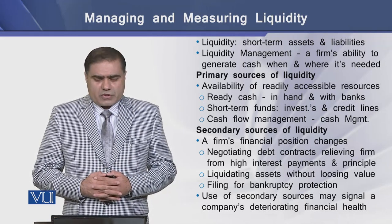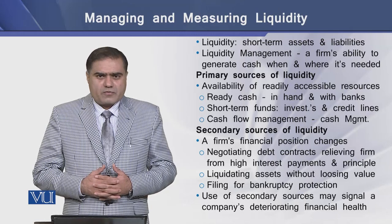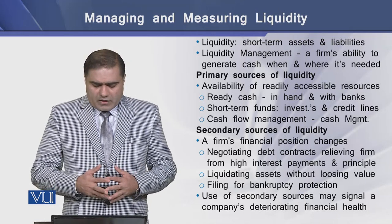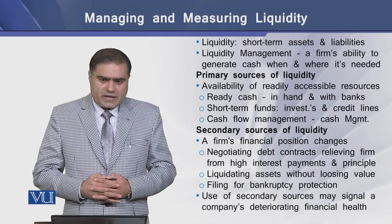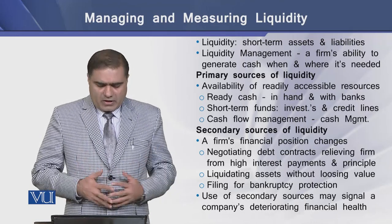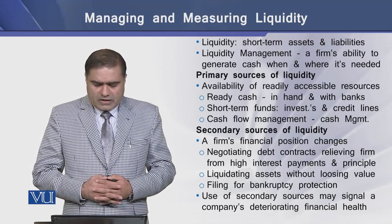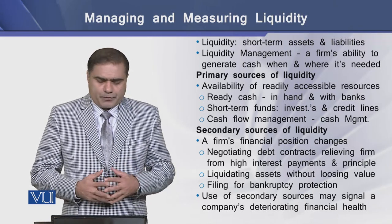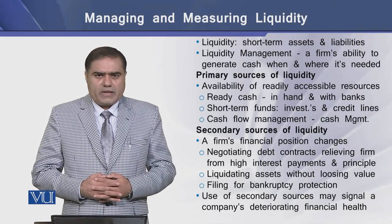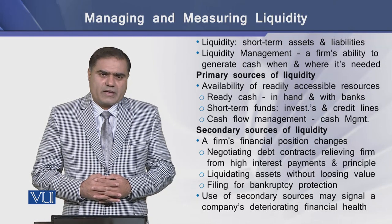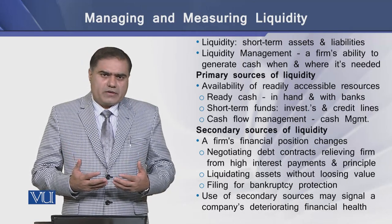Secondary sources of liquidity for a firm arise when a firm's financial position may change because of negotiating debt contracts that may relieve a firm from the pressure of high-interest payments and principal, so a little amount of liquidity may be available. Another form is the liquidation of the firm's assets without losing their value, so enough liquidity can be had. A third secondary source is the filing of bankruptcy protection, allowing a firm to cover its short-term liabilities to a certain extent.